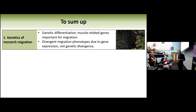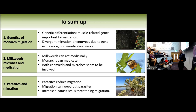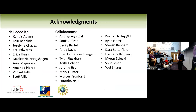To sum up: I talked about monarch migration and the genetic basis, showing that genes involved in muscle and motor activity seem to be driving the differences between migratory and non-migratory populations, as well as differences in migration strategies in East and West. I talked about milkweeds, showed how milkweeds can act as medicine, how monarchs can use them for medication, and that both chemicals and the microbiome seem to be involved in driving the plant-insect-parasite interaction. Finally, parasites reduce migration; migration can weed out parasites at the population level; and we're seeing increasing parasitism that may threaten the ongoing migration in North America. Thank you very much for your attention.